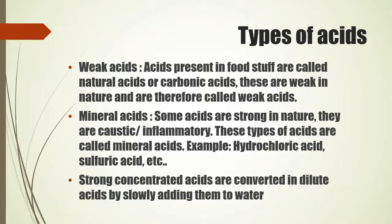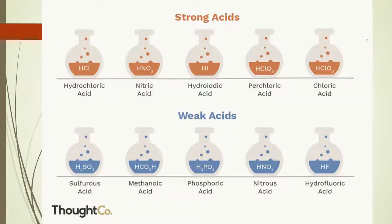Strong acids can be diluted by adding water to them, making them weaker. If you taste a dilute solution of baking soda, you will find it astringent and bitter. Some substances having an astringent bitter taste and slippery to touch — for example, lime water, baking soda, caustic soda, and soap — are called bases. Substances which are slippery to touch, bitter, and astringent are called bases.